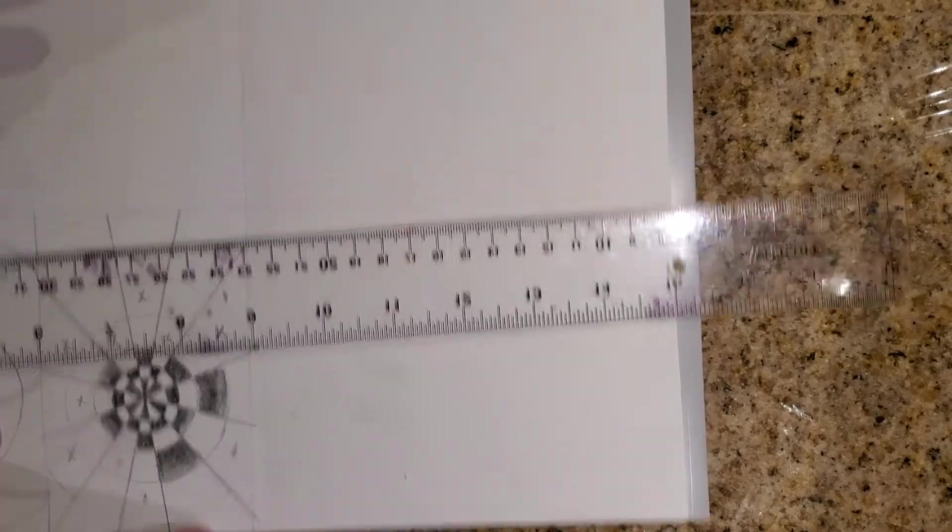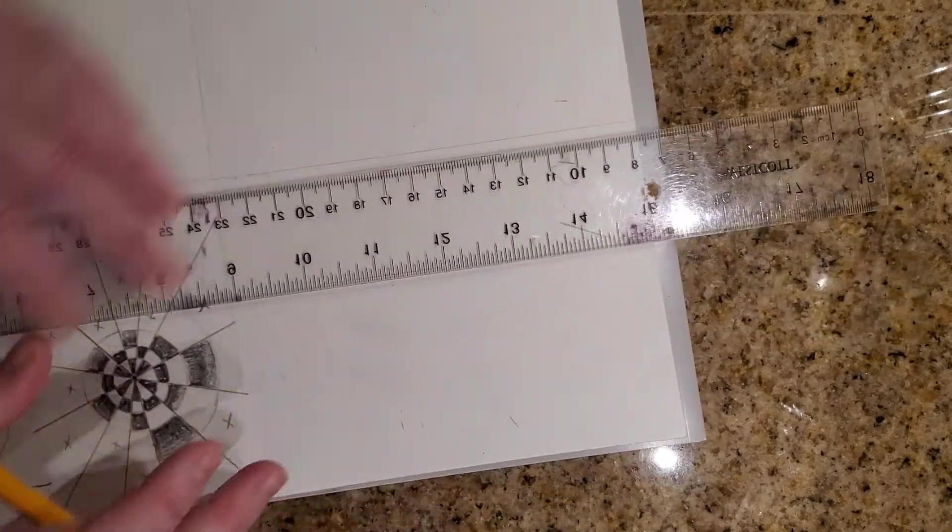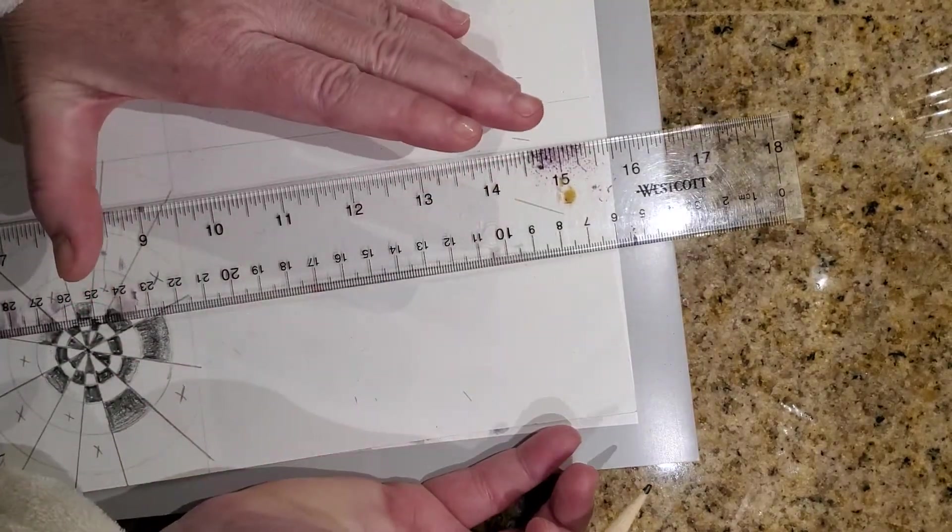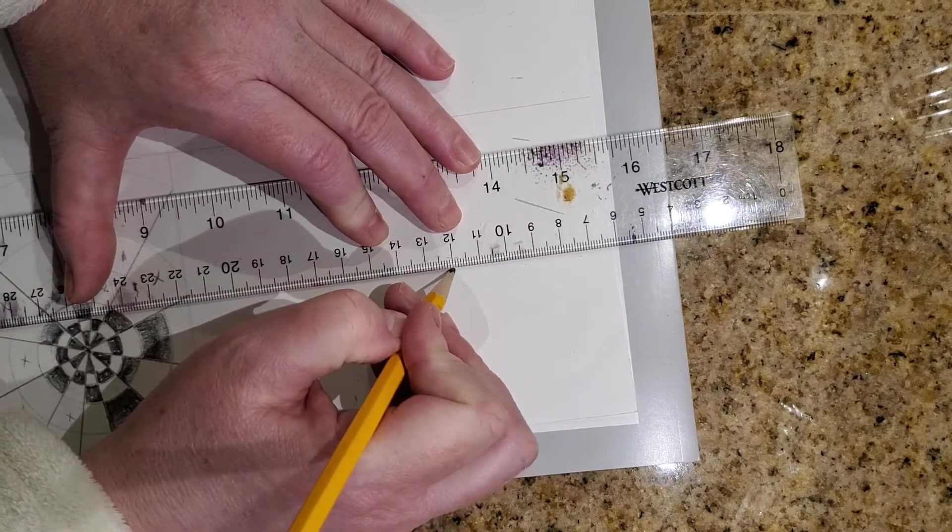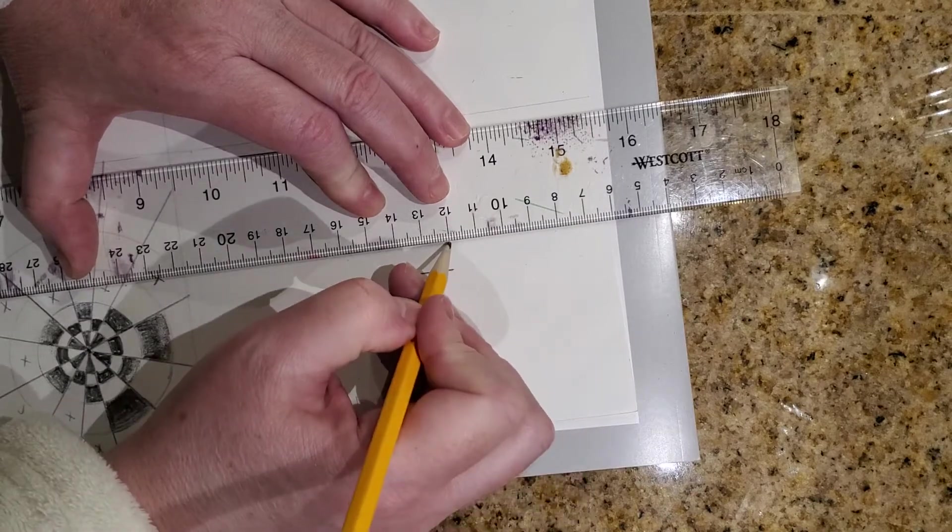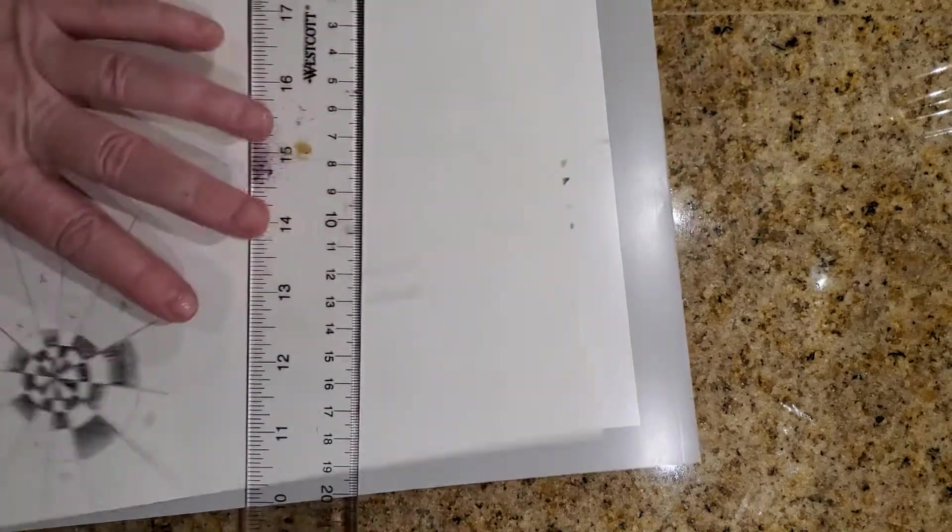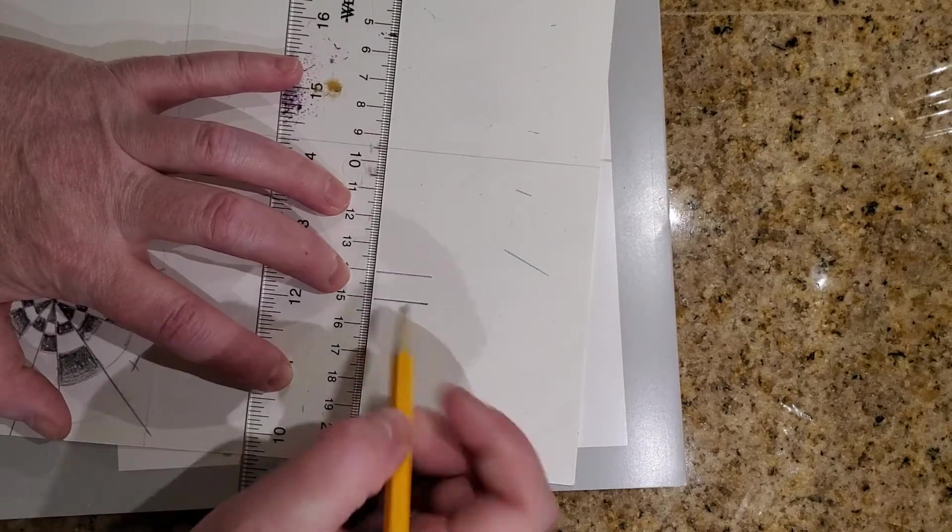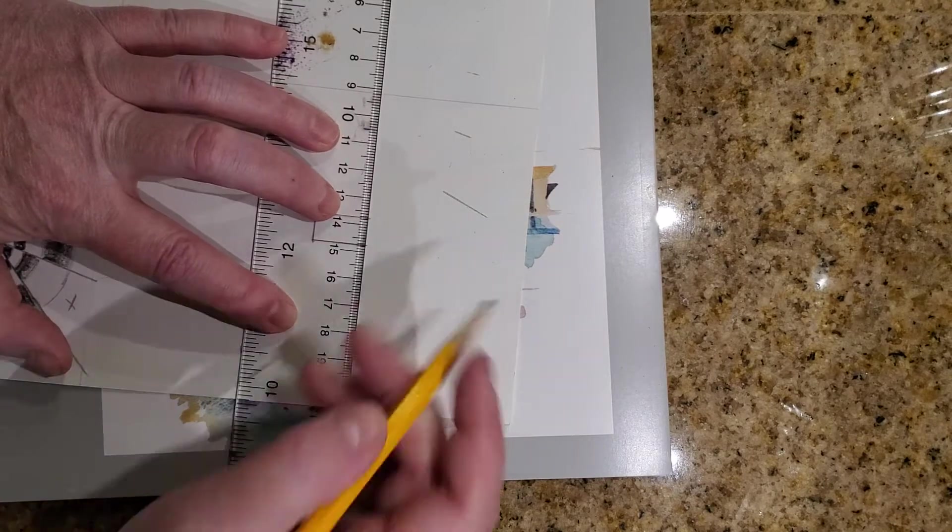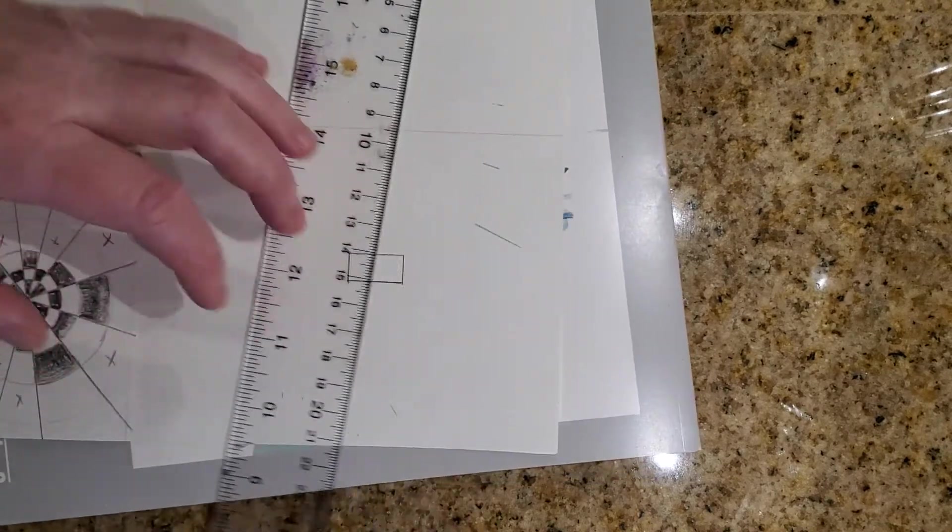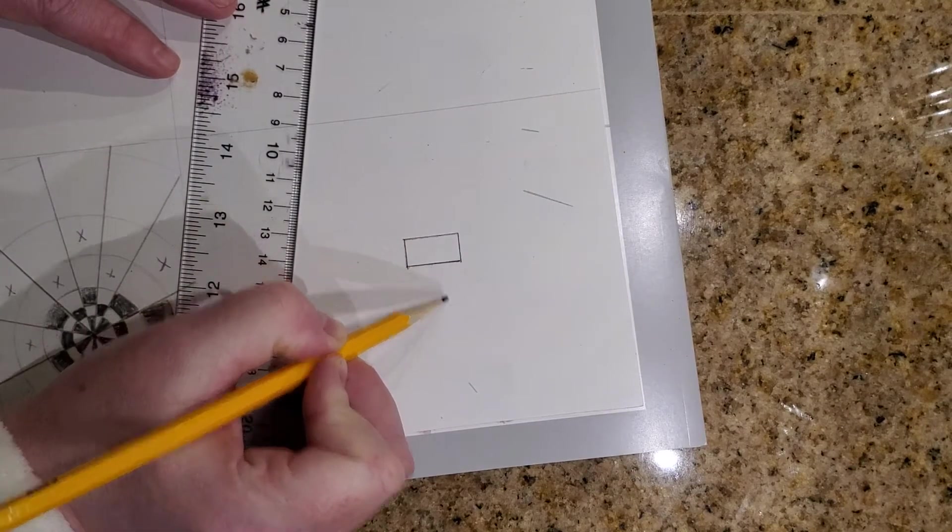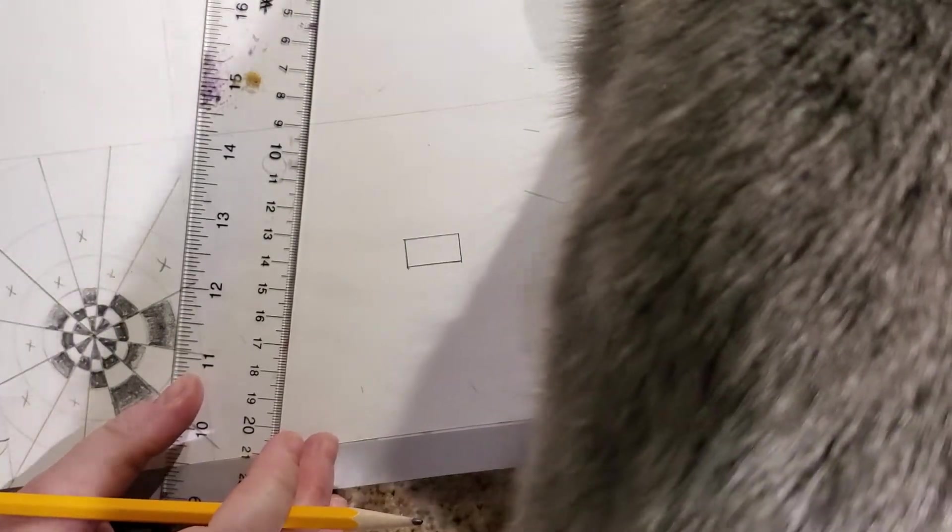You're going to need a ruler because you have to do this with a ruler. I guess I'm going to do centimeters just because I'm working on this small scale. You can do inches if you prefer. When you're working on concentric rectangles or concentric squares, I like rectangles, but you can do a square also if you want.